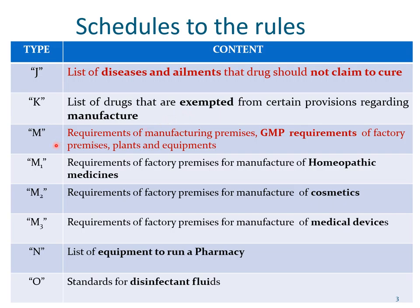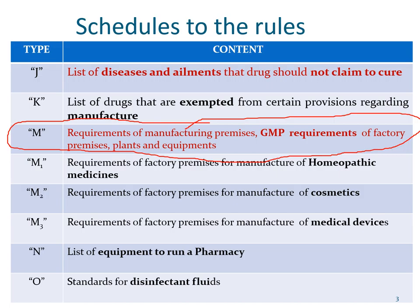Schedule M is very, very important — it gives the GMP requirements of manufacturing premises, factory premises, plants and equipment, and we are going to look at it in great detail. Schedule M has subparts: Schedule M1 states the requirements of factory premises for the manufacture of homeopathic medicines; Schedule M2 gives the requirements for the manufacture of cosmetics; and Schedule M3 gives the requirements of factory premises for the manufacture of medical devices.